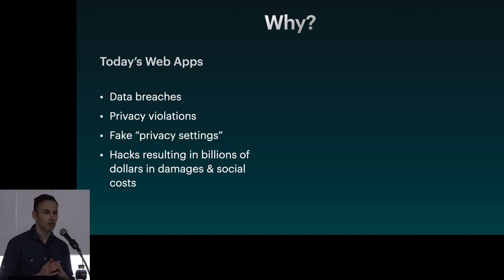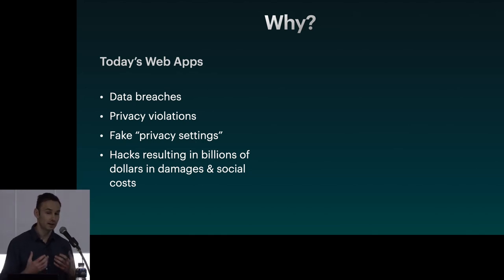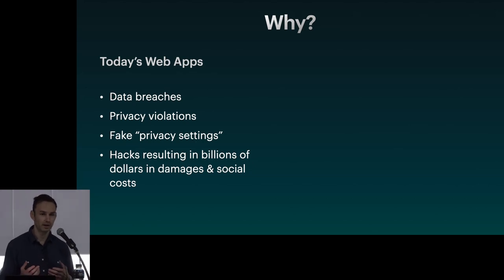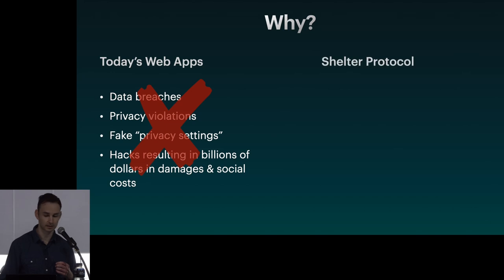The way that apps are designed today in Silicon Valley results in billions of dollars worth of damages to companies and users, in monetary costs as well as social costs. You might be familiar with the Experian hacks where everybody's credit scores were leaked along with social security numbers and other information. This is a huge problem. So we don't want to do this — we want something else. That's why we started working on Shelter Protocol.